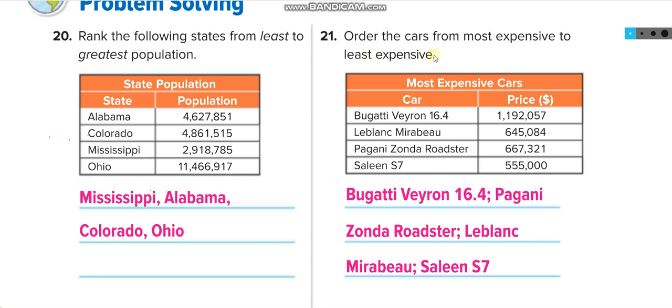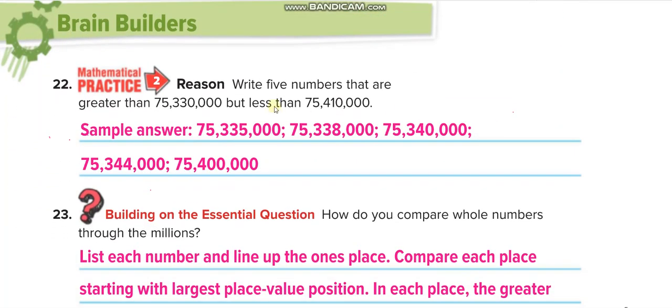Order the cars from most expensive to least, from greatest to least. The greatest one is Bugatti Veyron 16.4. It has a huge engine. Next, 645 and 667—Bugatti is next. Then Lamborghini, then McLaren, then Saleen S7, $555,000. I must buy a Bugatti.